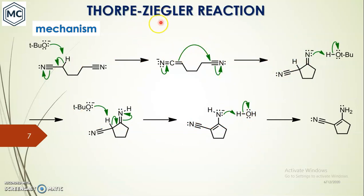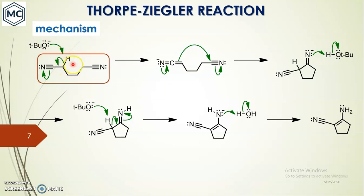Next we will discuss the mechanism of the Thorpe-Ziegler reaction. We start with a dinitrile compound. On addition of base, the alpha hydrogen is deprotonated and a carbanion is formed. This carbanion is added to the carbon of another nitrile in the same molecule, and a cyclization occurs.